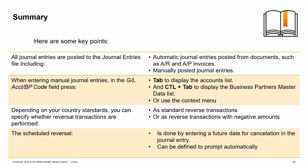Here are some key points to take away. All journal entries are posted to the journal entries file, including automatic journal entries posted from documents such as AR and AP invoices, and manually posted journal entries. When entering manual journal entries, in the GL Account BP Code field, press Tab to display the accounts list, or CTRL+Tab to display the business partner's master data list. You can also enter the list from the context menu. Depending on your country standards, you can specify whether reversal transactions are performed as standard reverse transactions or as reverse transactions with negative amounts. The scheduled reversal is done by entering a future date for cancellation in the journal entry, and the cancellation transaction can be defined to prompt automatically. You have completed the topic on Posting a Journal Entry. Thank you for your time.